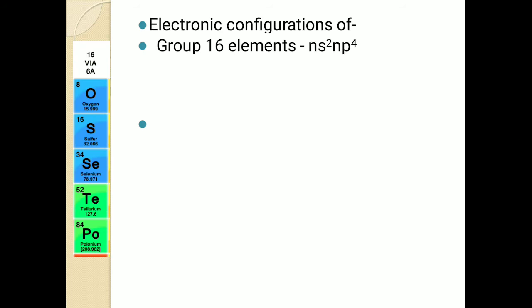Hello students, welcome to the second session of chemistry. In the last session we started with the seventh lesson of your syllabus — elements of group 16, 17, and 18. We learned about the first property of those groups, that is occurrence. Now in this session we will start with the second property, which is electronic configuration. We will study the electronic configuration of all three groups: 16, 17, and 18.